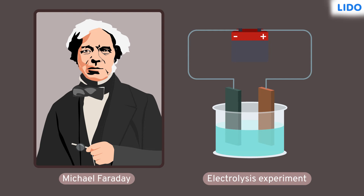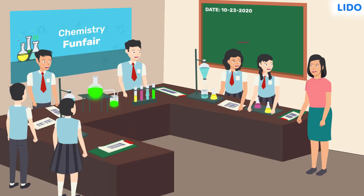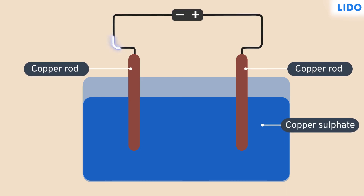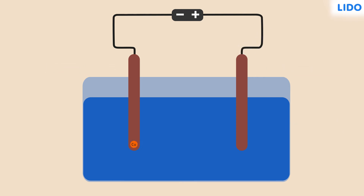Faraday had conducted an electrolysis experiment and calculated the charge on 1 mole of electrons. Neha got curious and asked, 'But how did they find it?' Rina ma'am replied, 'By doing a simple experiment. He dipped two copper rods in a solution of copper sulfate and passed a current through it. Due to the current, copper on one side carried the charge to another side to complete the circuit. In this way, copper on one side was reduced and on the other side it increased.'